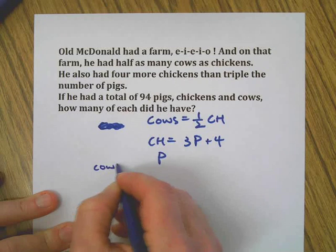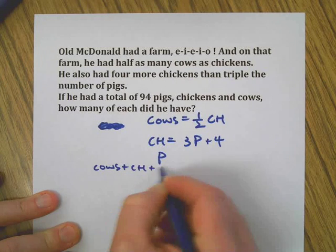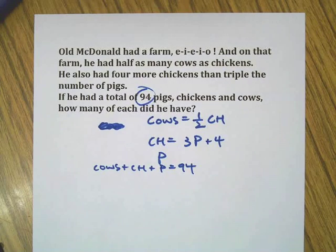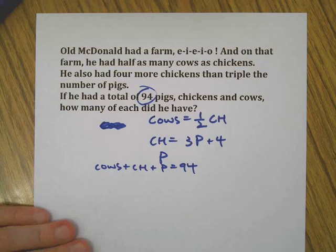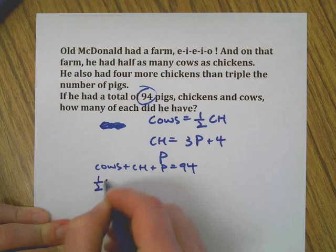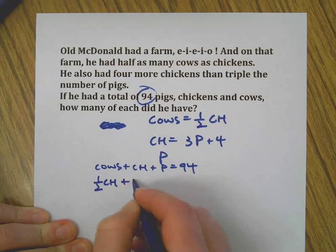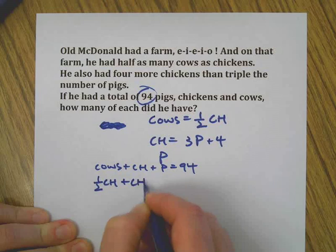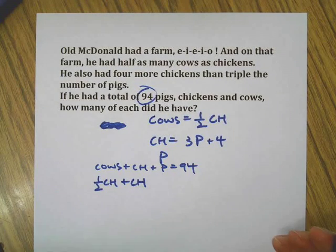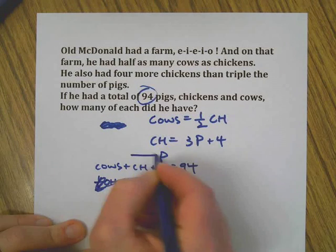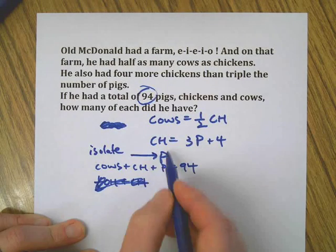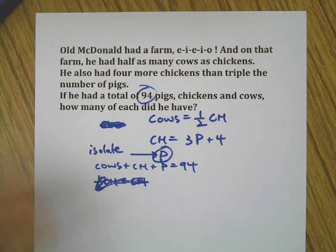We want cows plus chickens plus pigs to equal 94. Let's start substituting, shall we? First of all, we have cows, which is half the number of chickens. Then we have chickens. I changed my mind—I want to isolate this single variable because it's already by itself.